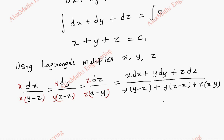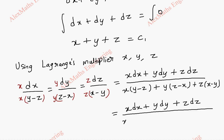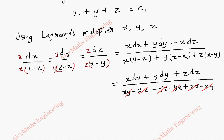The numerator is written as x dx plus y dy plus z dz. For the denominator, we multiply the terms: x into y minus z gives xy minus xz, y into z minus x gives yz minus xy, and z into x minus y gives zx minus zy. We notice xy cancels with minus xy, zx minus zx cancels, and yz minus yz cancels — so we get 0. Thus we have x dx plus y dy plus z dz whole divided by 0.